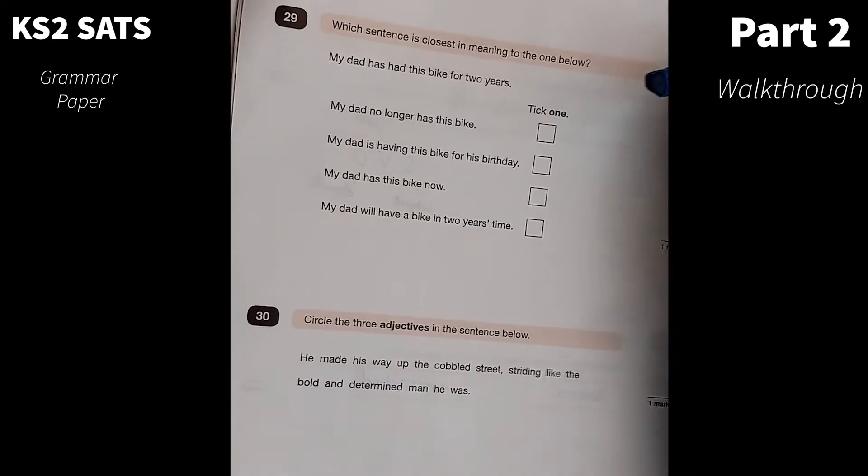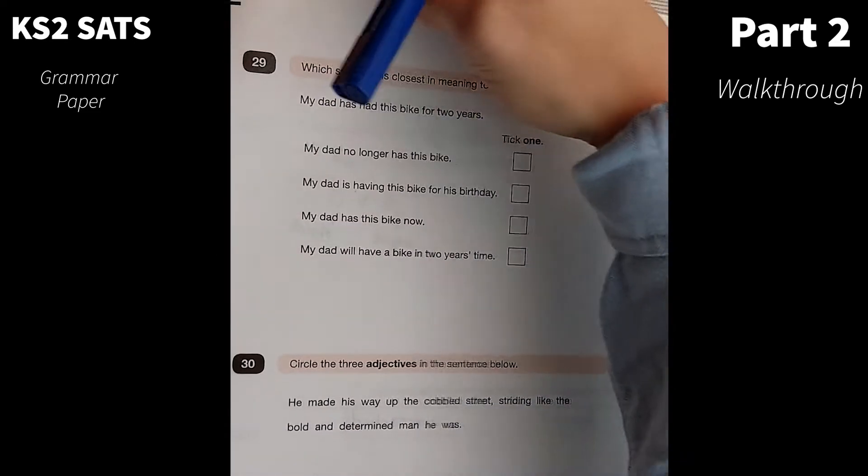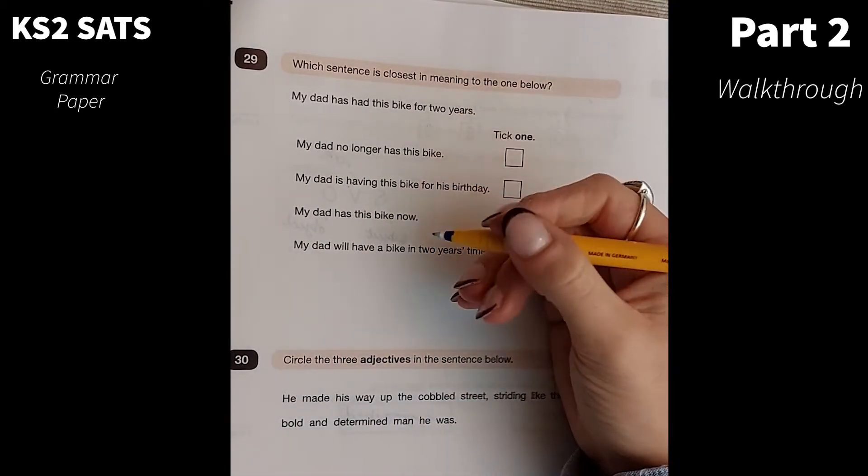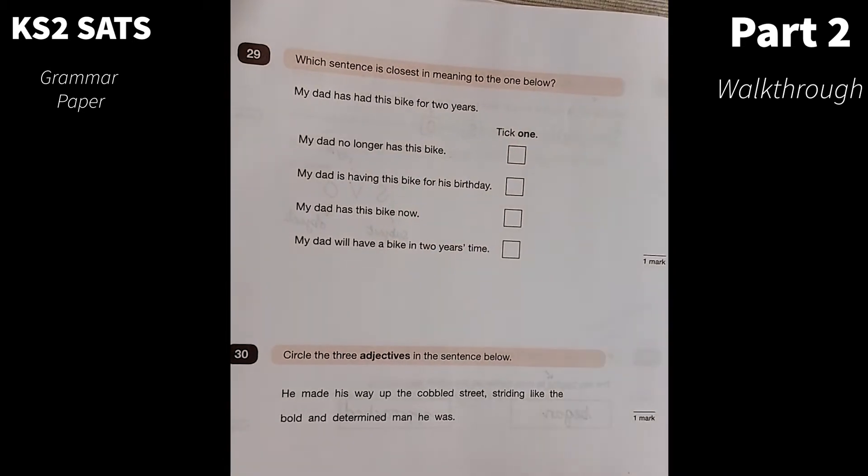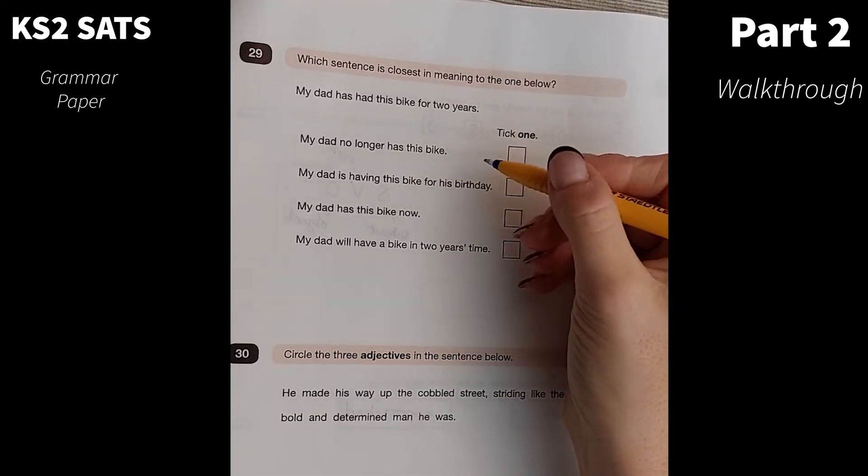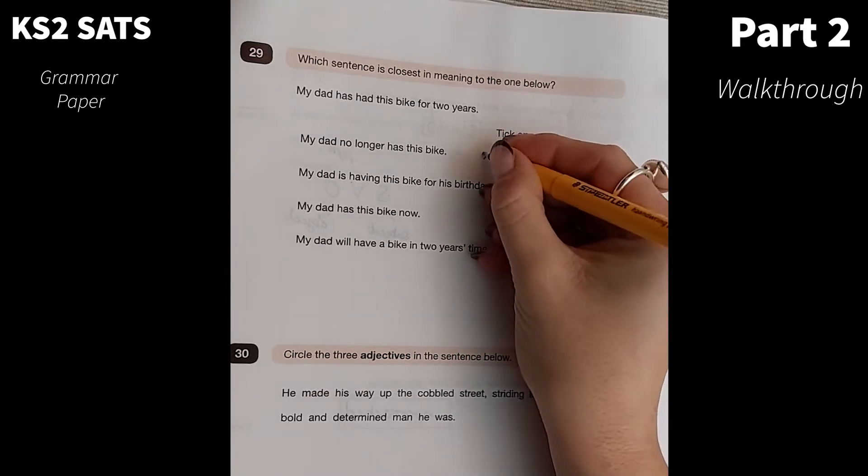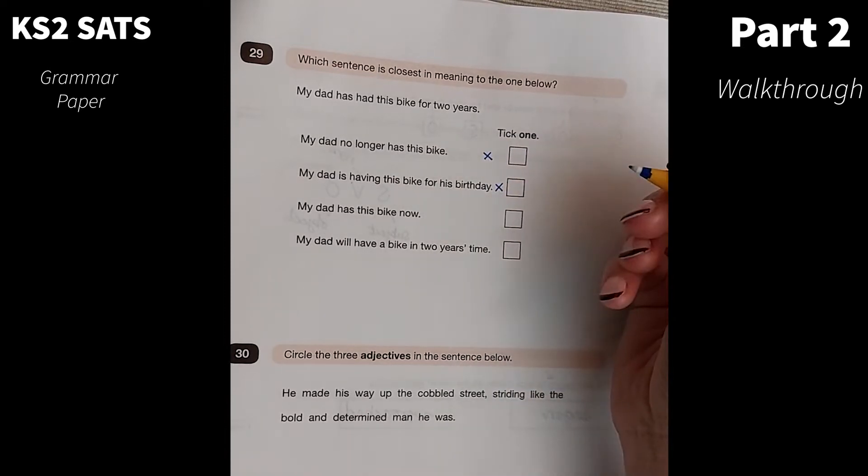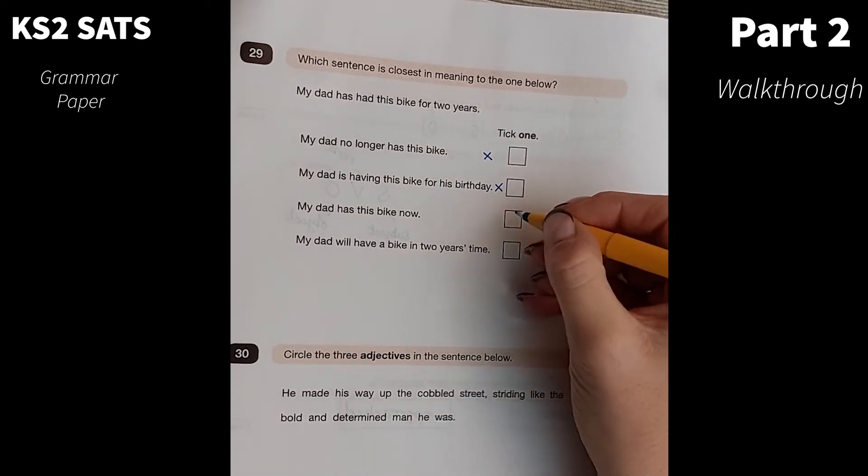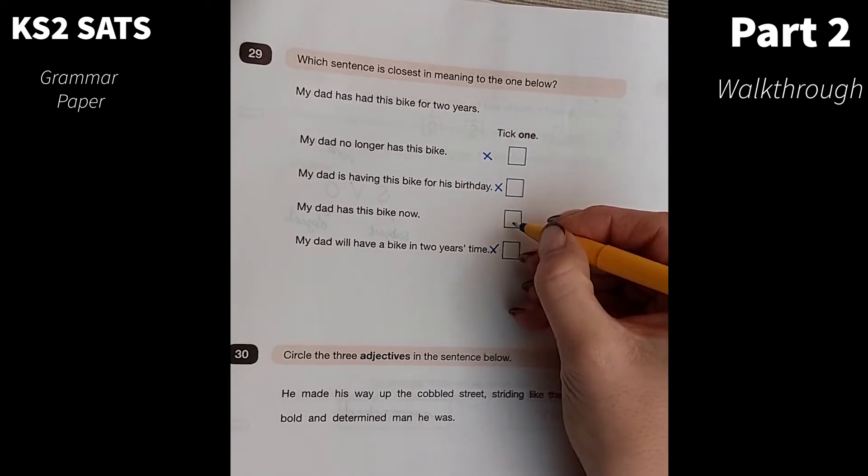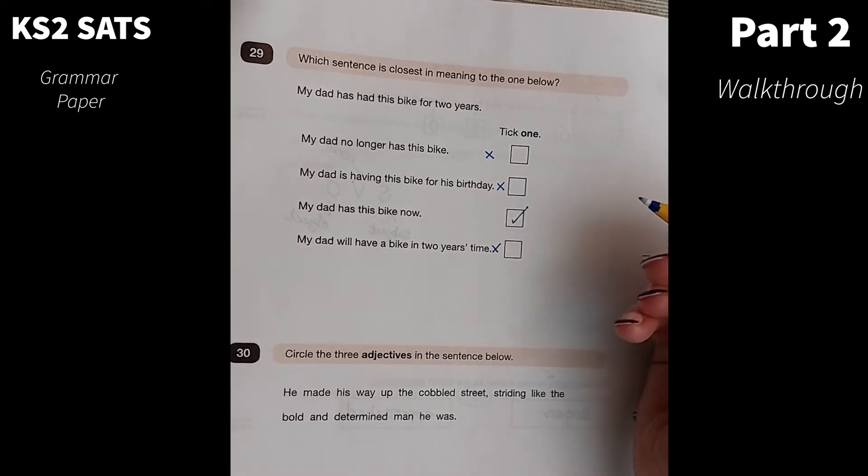Number 29. Which sentence is closest in meaning to the one below? This is quite a tricky one, I feel. It would take a lot of reading through. If you just skimmed through and didn't read through properly, you might not get it. My dad has had his bike for two years. So has had. My dad no longer has this bike. That wouldn't be correct. My dad is having this bike for his birthday. Well, no, that's not what it means. My dad has this bike now. Possibly. My dad will have a bike in two years' time. Well, it doesn't say that. So it's going to be this one here.